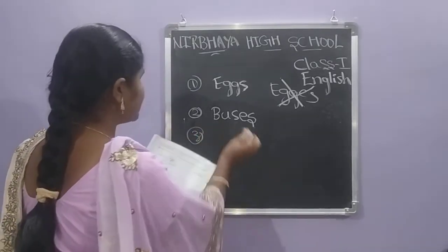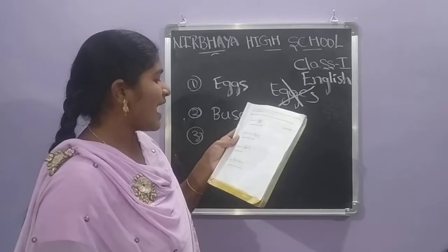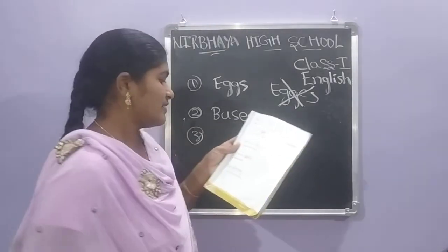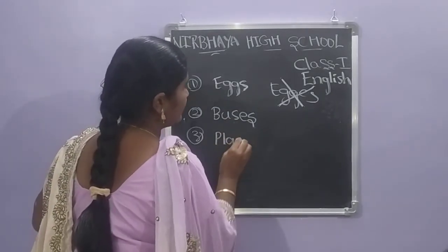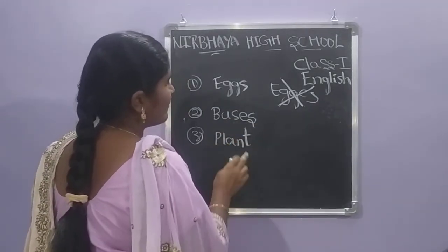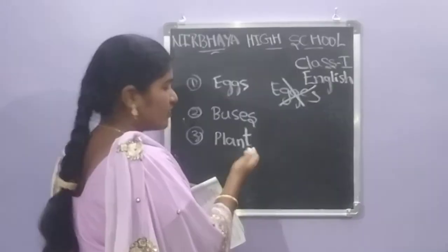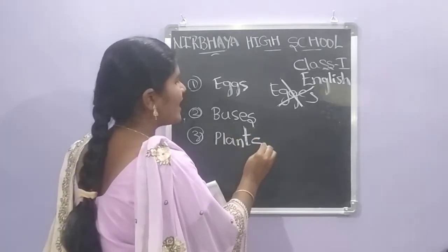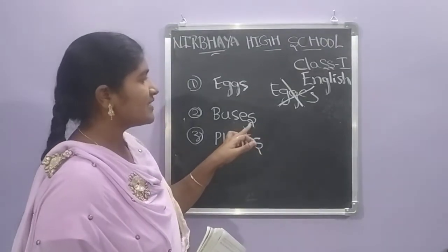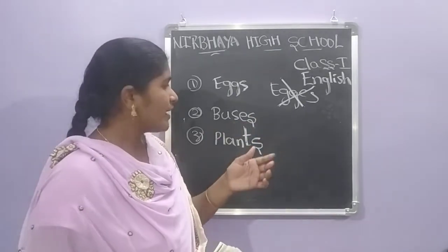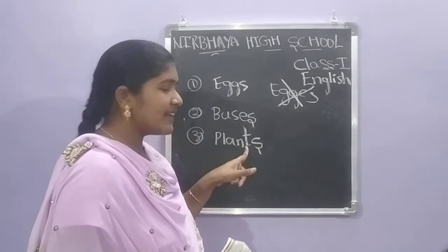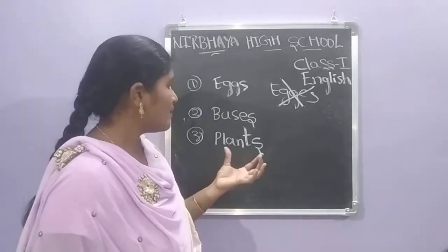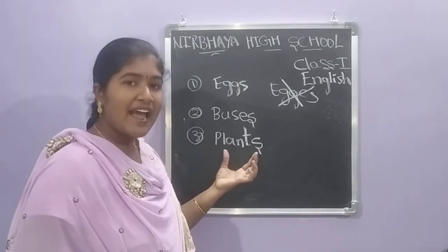Next one: There are many plants. Plants or plantes? The word ends with T, not O, R, S, or X. So we are writing only S — plants. This is the plural form.